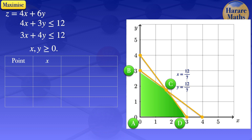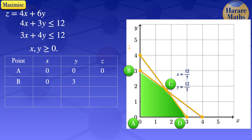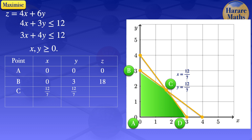At point A, x equals 0 and y equals 0. Substituting into z equals 4x plus 6y gives z equals 0. At point B, x equals 0 and y equals 3. Substituting gives z equals 18. At point C, x equals 12 over 7 and y equals 12 over 7. Substituting gives z equals 120 divided by 7. At point D, x equals 3 and y equals 0. Substituting gives z equals 12.